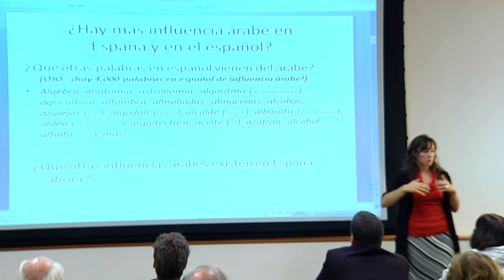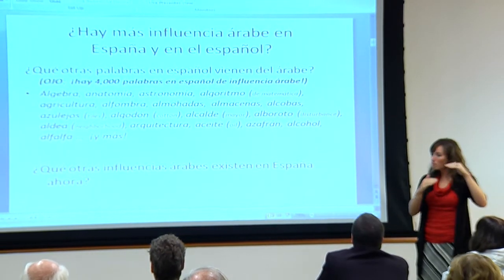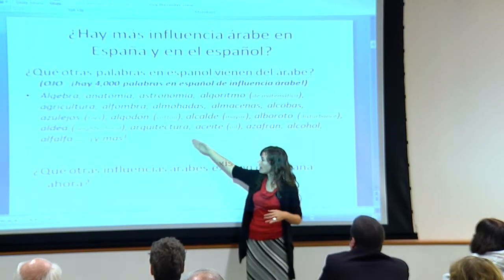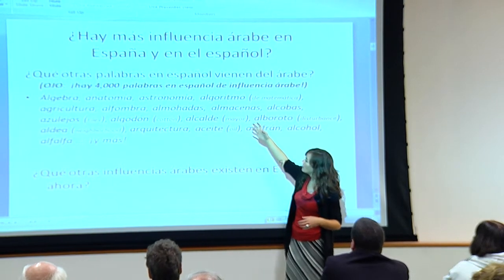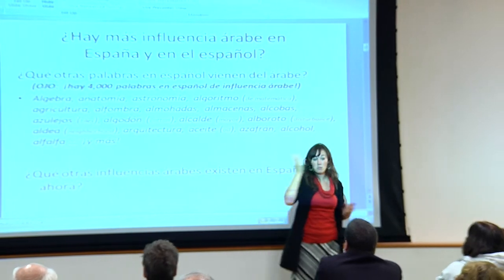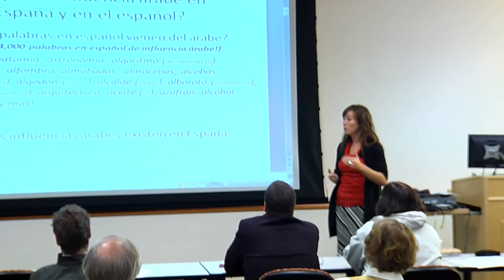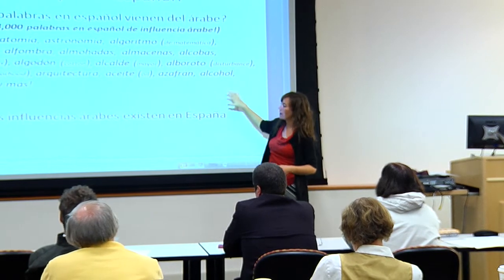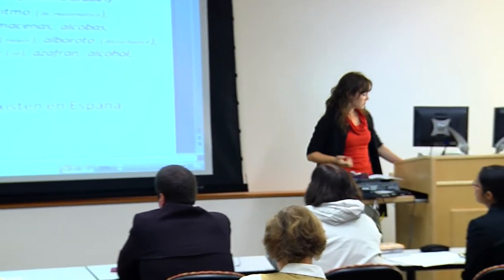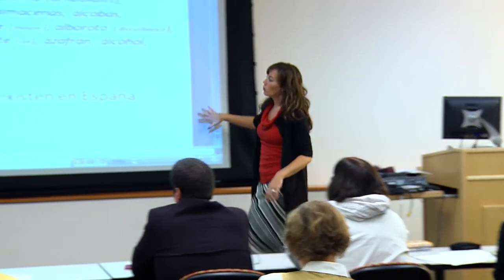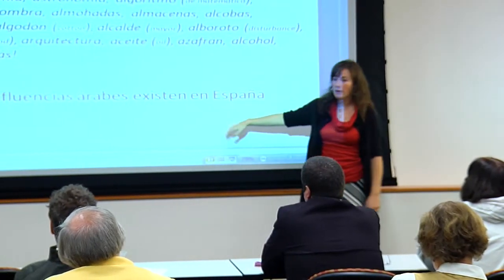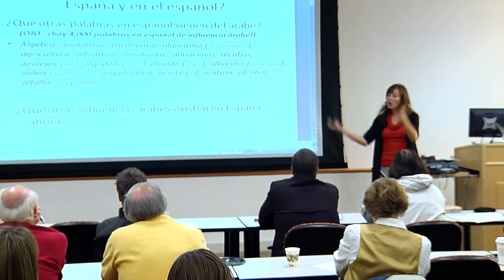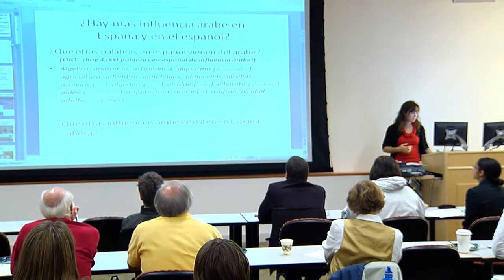We do this and talk about how all these words begin with 'AL' — why is that? We talked about how there are 4,000 words in the Spanish language that are Arabic words or come directly from Arabic. That leads into an interesting conversation about what these vocabulary items have in common and what other Arabic influences exist in Spain. It's an example of how I was able to teach what I'm supposed to teach but put it in the context of my CIEE trip.